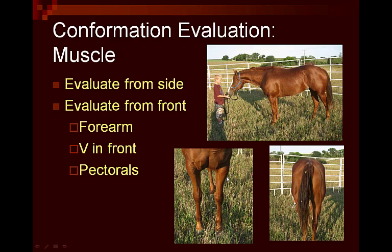When we look from behind, we'd like the horse to be wider from the base of the stifle than at the point of the hip. Remember, the push, power, and drive comes from behind, so we'd like this area to be wider through the stifle than at the point of the hip. We also look at the muscling in the gaskin, and there should be as much outer muscling as there is on the inside.